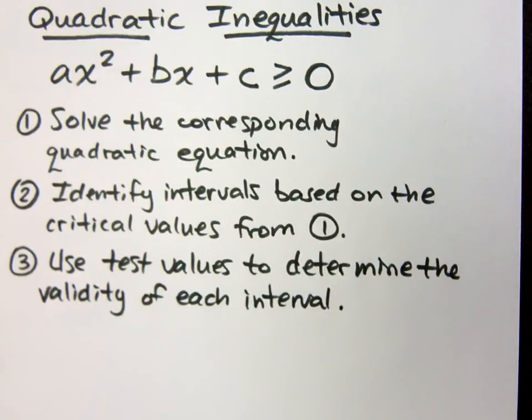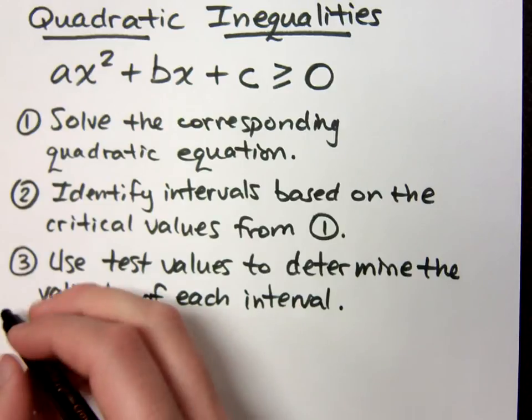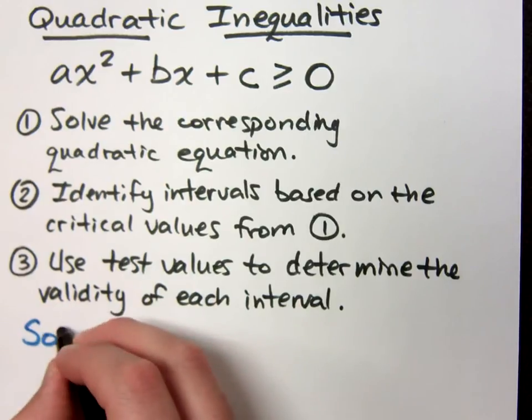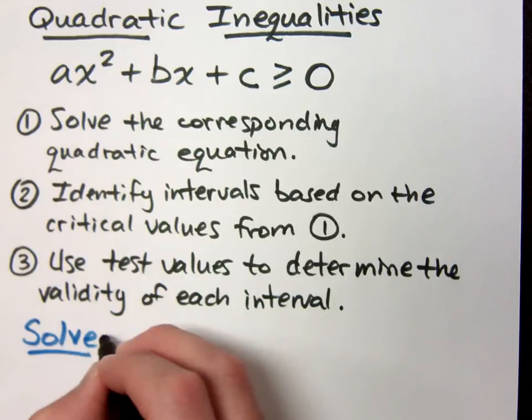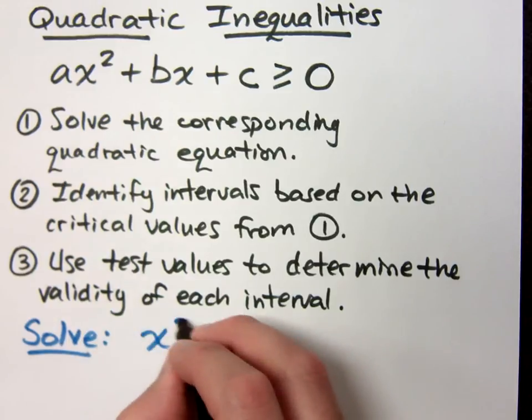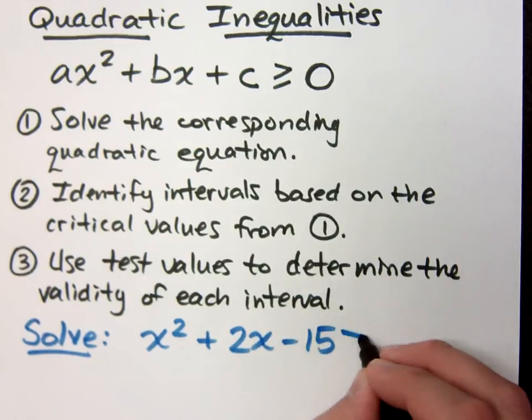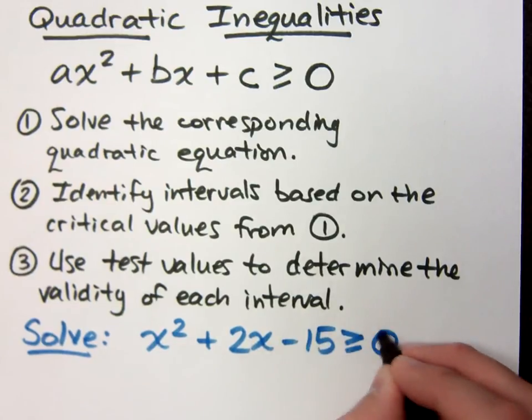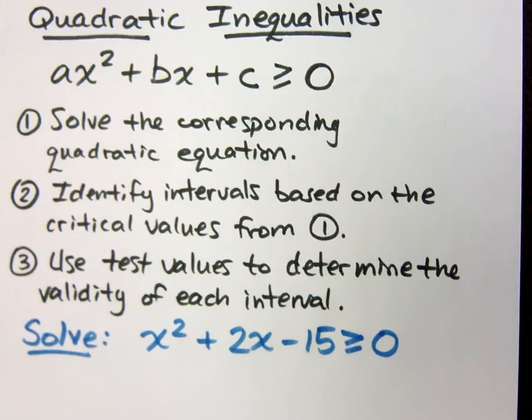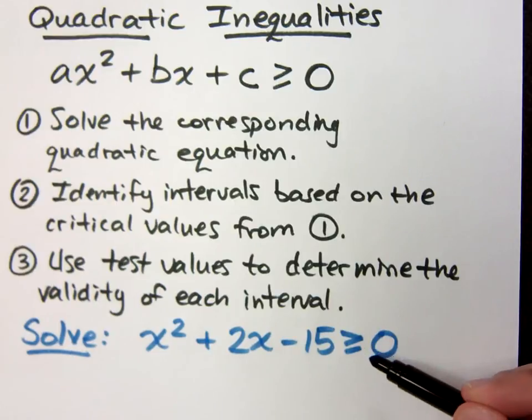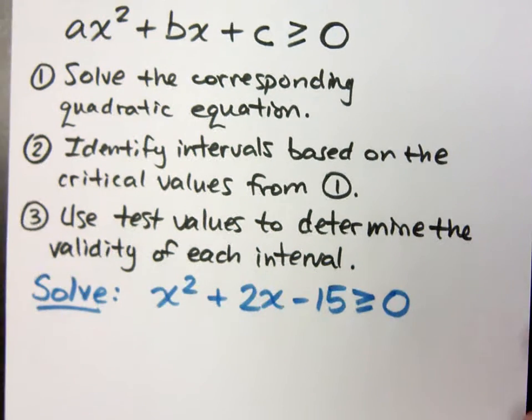For example, if I take x squared plus 2x minus 15 is greater than or equal to zero. Now here's what you don't want to do. Don't work this whole thing with the inequality in place. It doesn't work out. It leads to statements that don't make any sense, statements that are wrong.